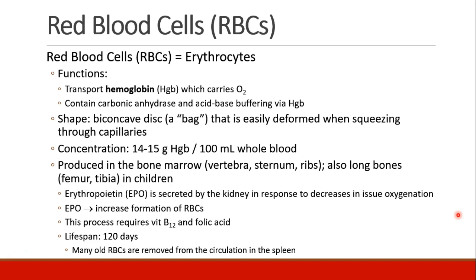The cells are shaped like a biconcave disc. They are basically a bag that can easily be deformed when they squeeze through these tiny little capillaries. The normal concentration of hemoglobin in the blood is about 14 to 15 grams of hemoglobin per 100 mL of whole blood.